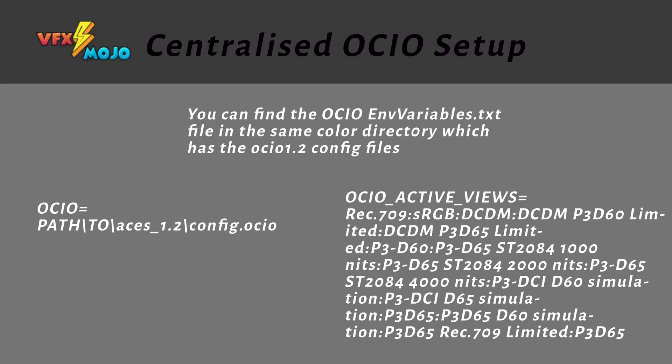Now we want to set up the environment variables to make the OCIO config available for all packages. I will show you how to set up variables on Windows 10 — depending on your OS, this might differ. Guides on how to set up environment variables for different systems can be easily found online, so I will just cover this one system. The variable names do not change depending on your OS, so please follow the same naming structure.